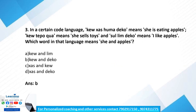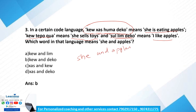Question number 3. In a certain code language, 'KEWXASHUMADE KO' means 'she is eating apple,' another code means 'she sells toys,' and another code means 'I like apples.' Which words in that language mean 'she' and 'apple'? To find this, we need to identify the code for 'she' and for 'apple.'